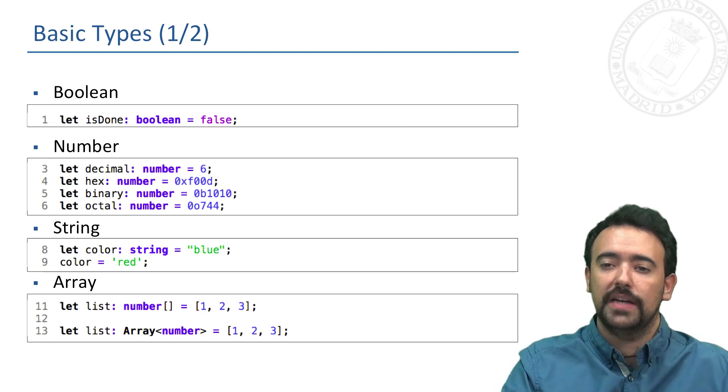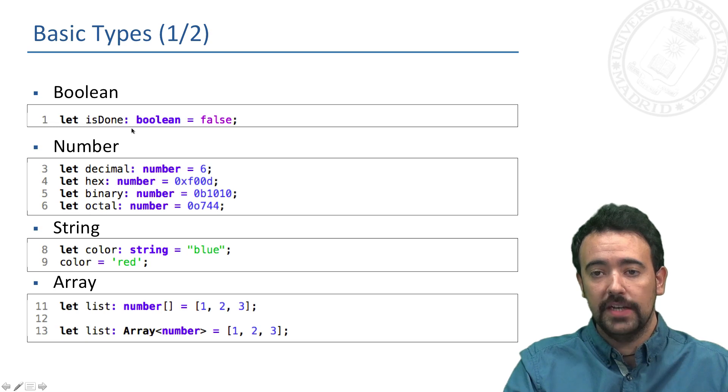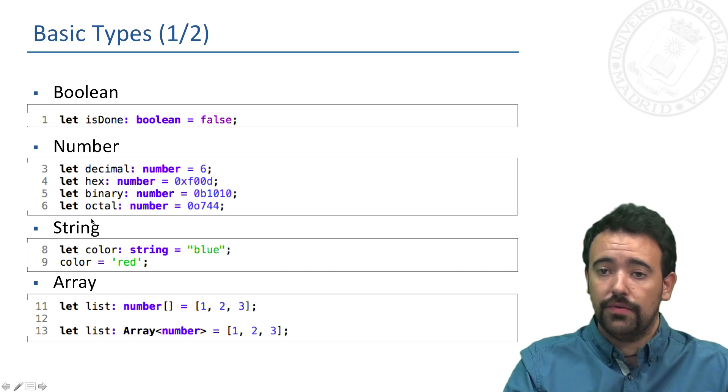Of course we have booleans in TypeScript, for instance this var 'done' is of type boolean. We have numbers that support a set of formats for numbers.